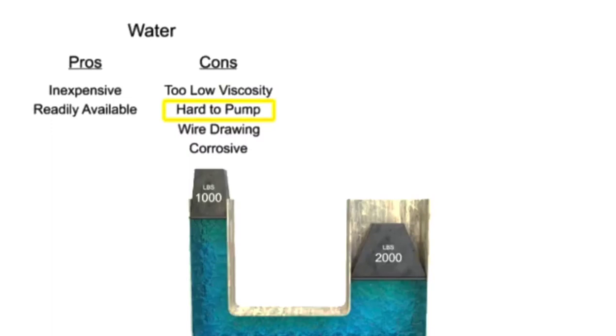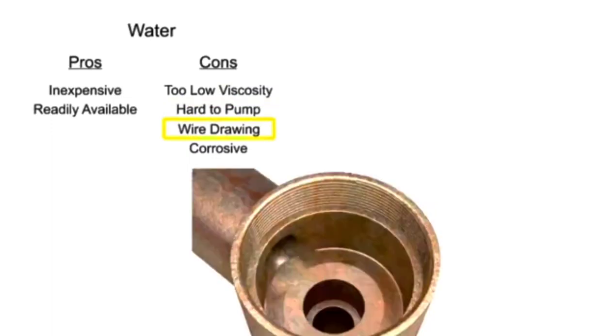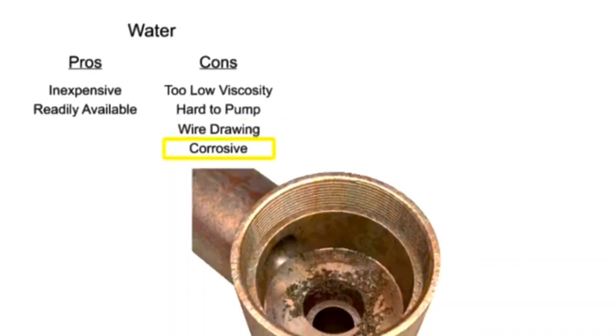Additionally, the speed at which it flows through the system causes an effect known as wire drawing. Wire drawing occurs when the water flow erodes or scores a pathway in the metal of machinery as it goes around corners and through orifices. It also has corrosive effects on metal machinery.